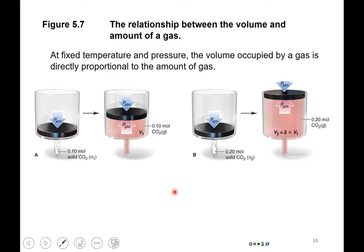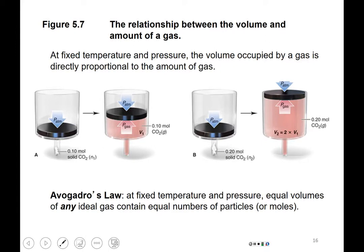The final gas law is Avogadro's Law, describing the relationship between volume and amount of gas. If you start with 0.1 moles of CO2 and it turns into a gas at atmospheric pressure, it occupies a certain volume. With twice as much — 0.2 moles — the volume is twice as large. Avogadro's Law states: at fixed temperature and pressure, equal volumes of any ideal gas contain equal numbers of particles or moles.